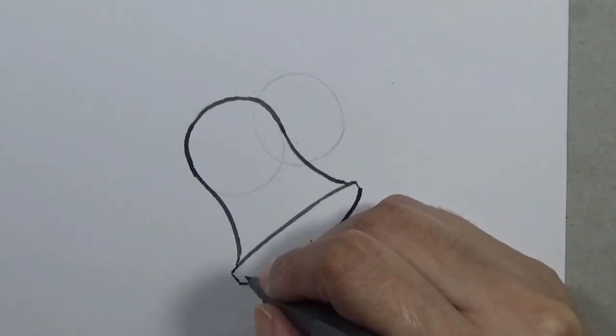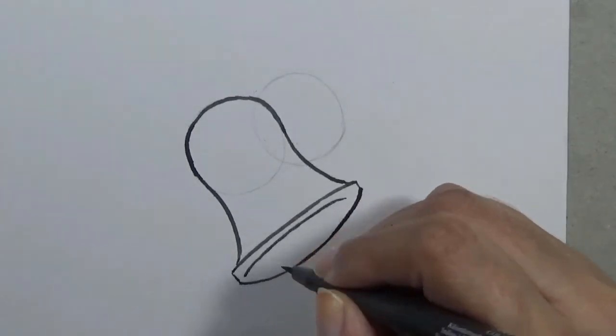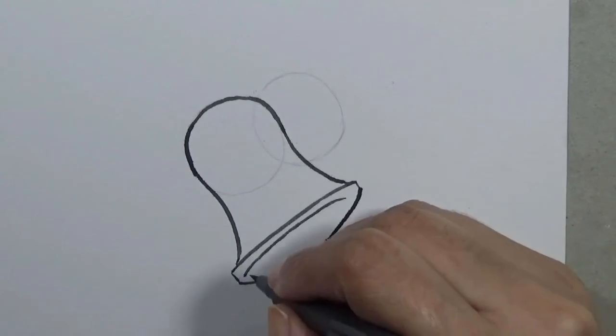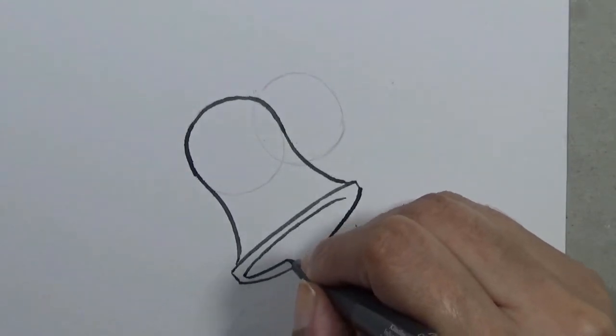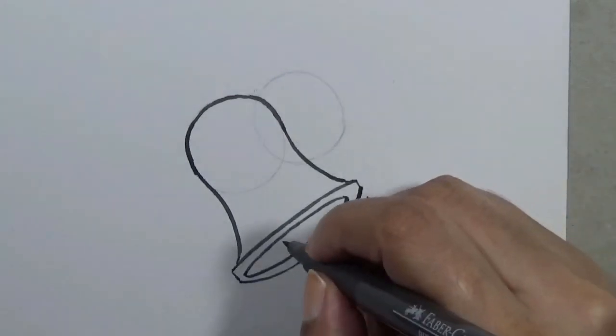Now, draw one circle in the center. Draw one circle in the center and draw one circle in the center.